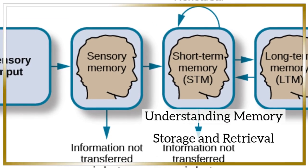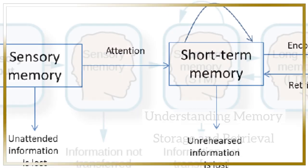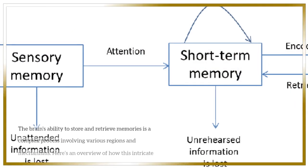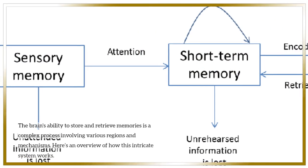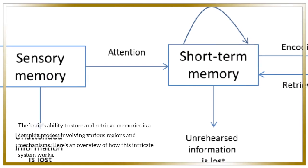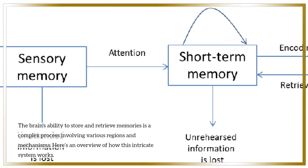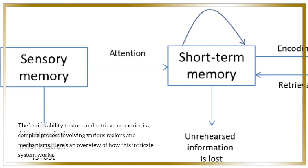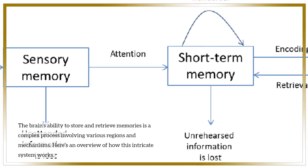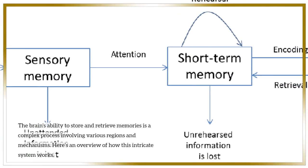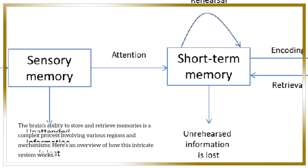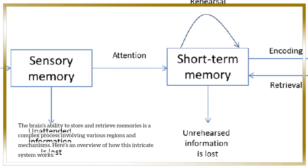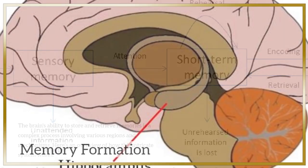Understanding memory storage and retrieval. The brain's ability to store and retrieve memories is a complex process involving various regions and mechanisms. Here's an overview of how this intricate system works.